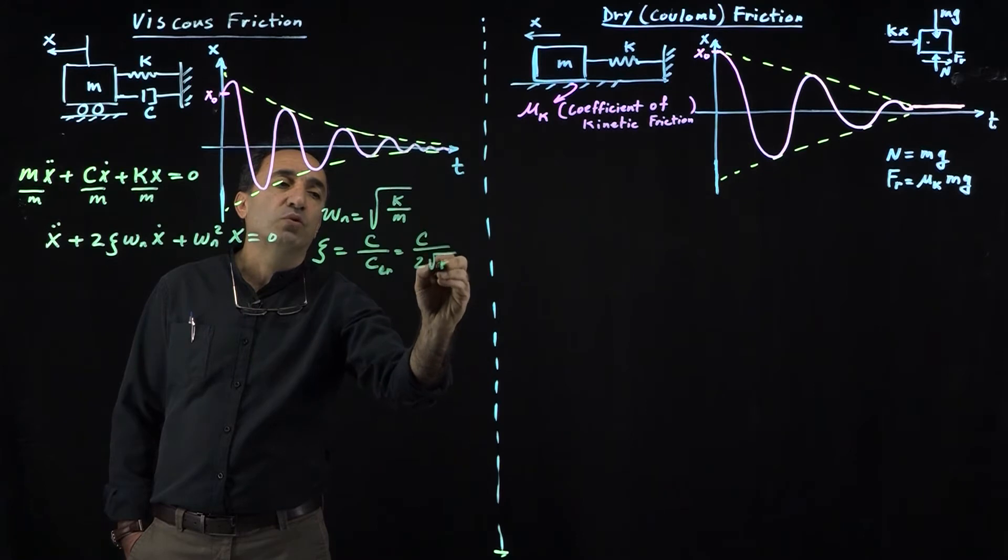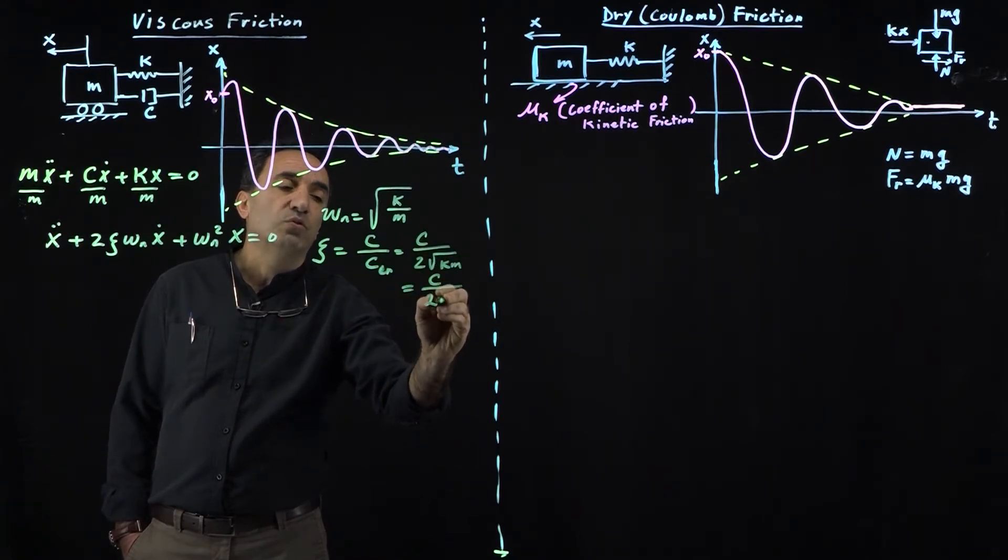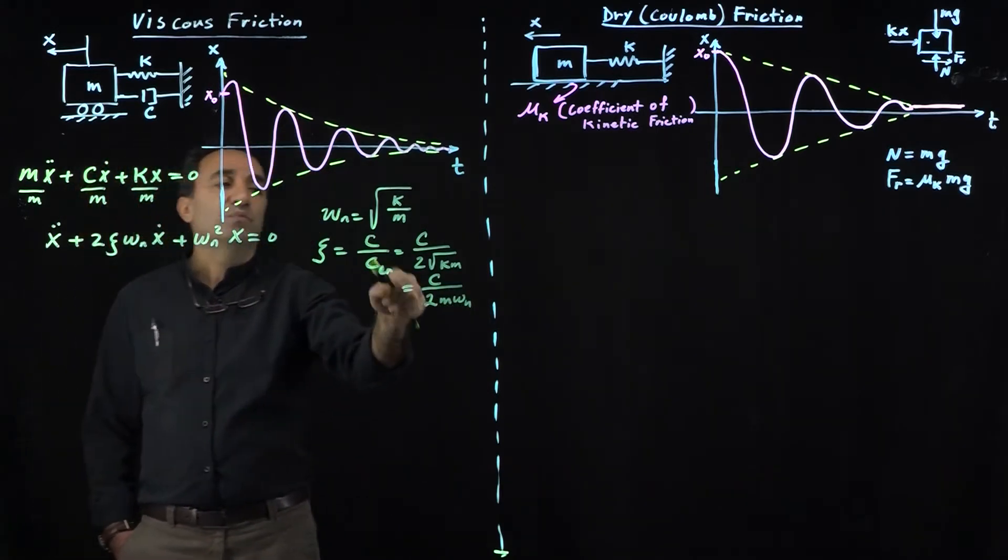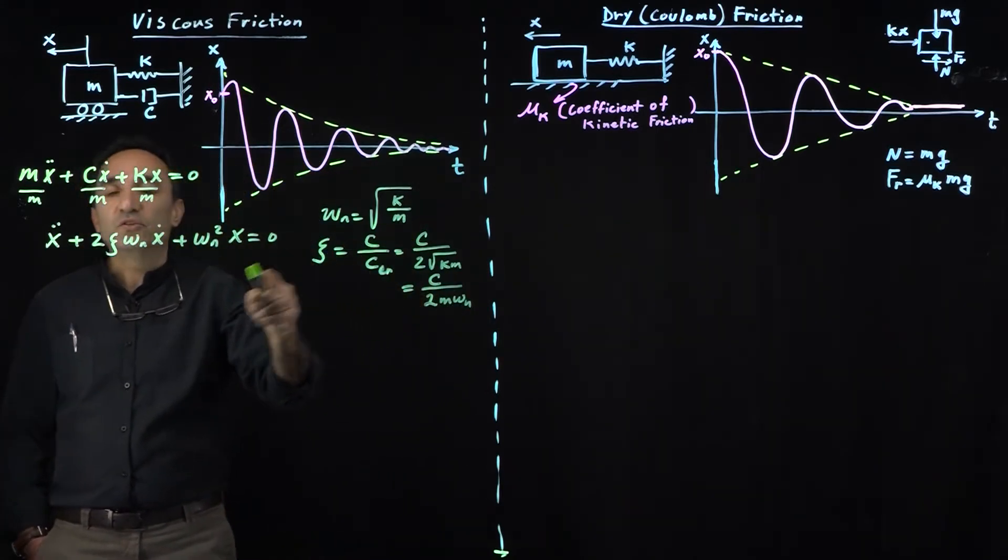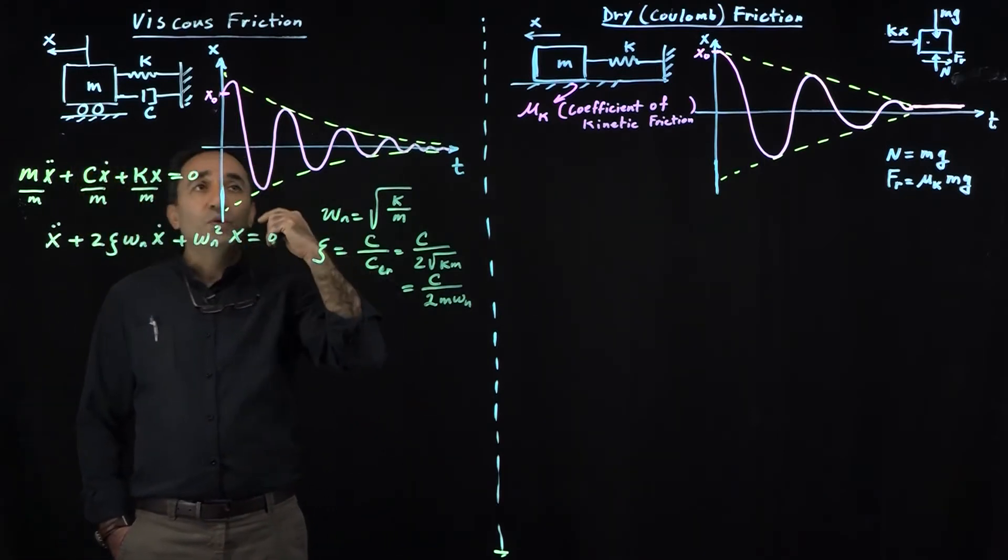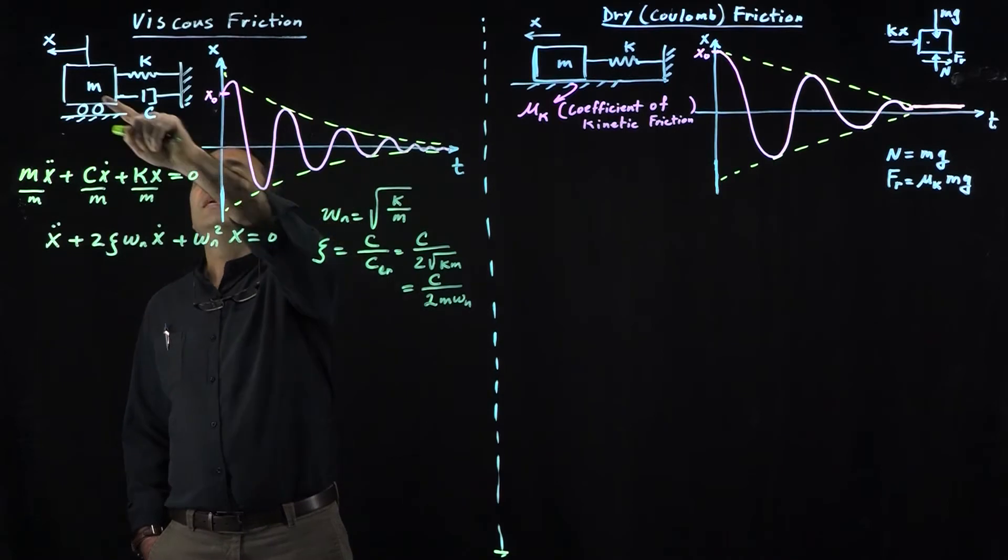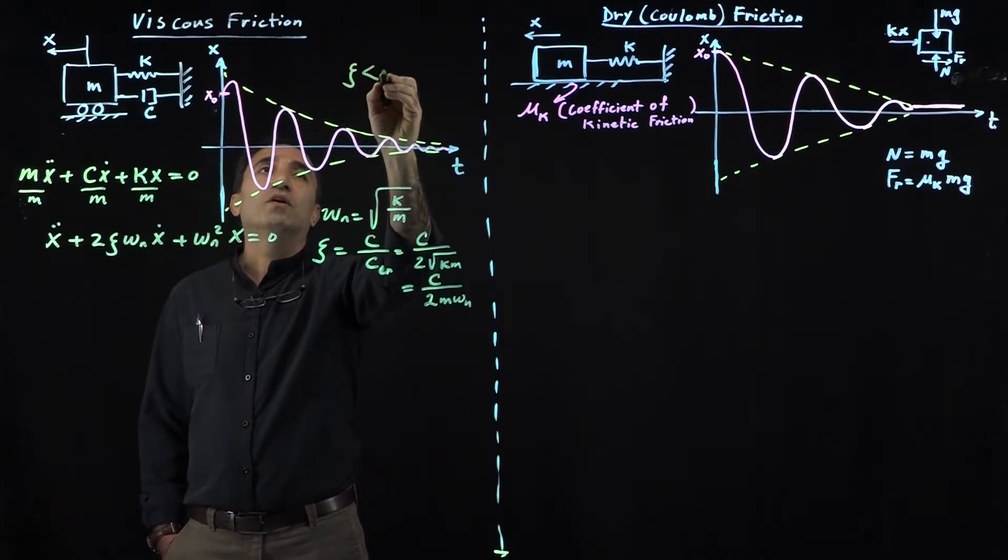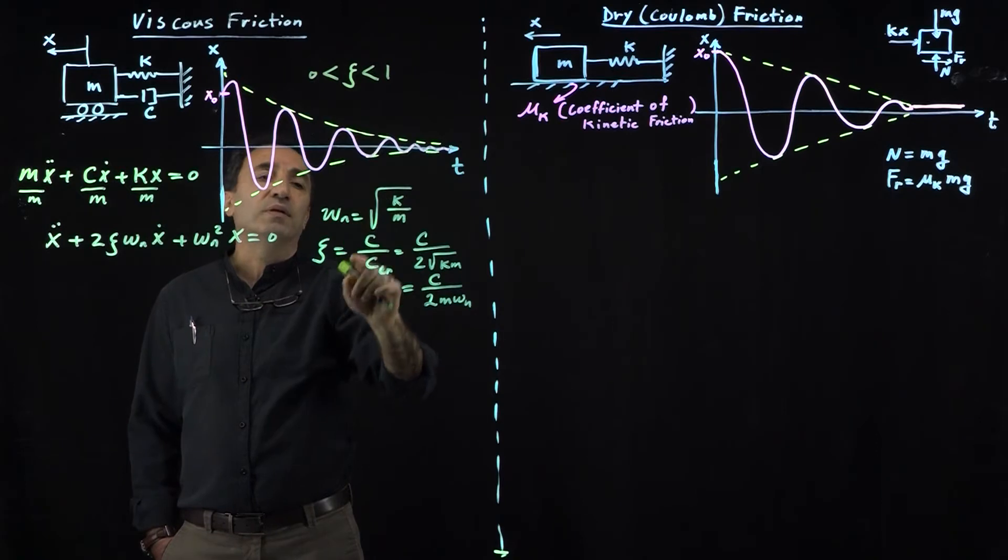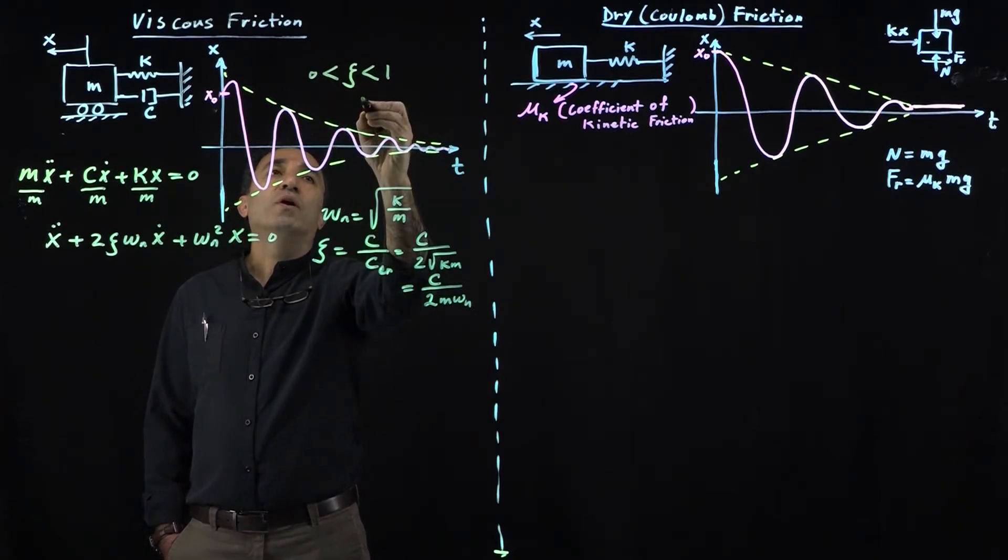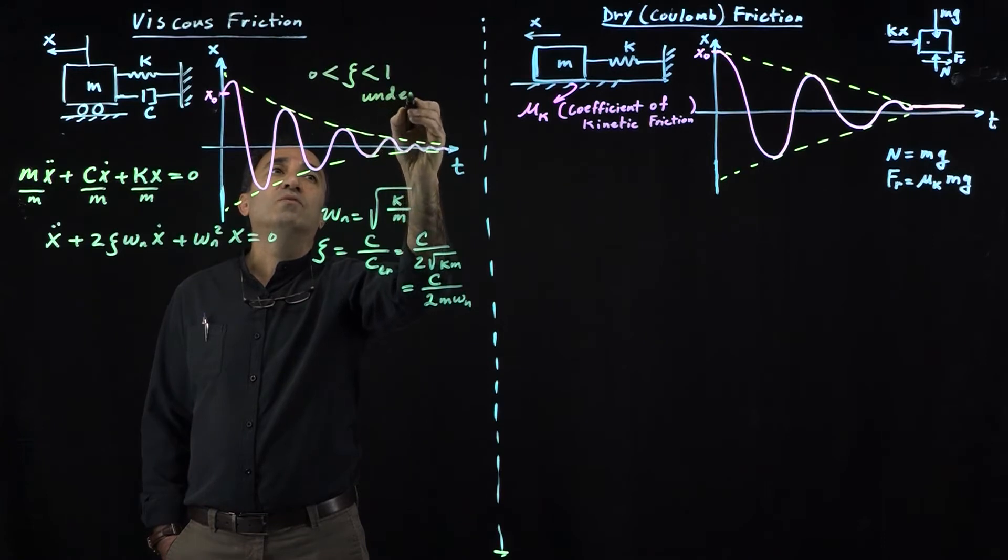You could write it as C divided by 2m omega_n. These are the manipulations of these terms here. This response I've shown you is specifically for a case we call underdamped, where zeta, this damping ratio, is between 0 and 1.